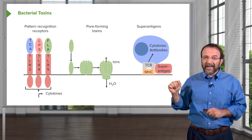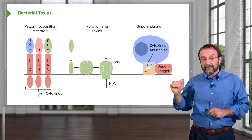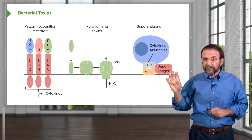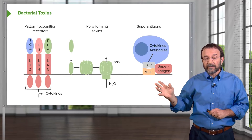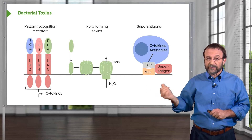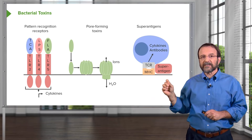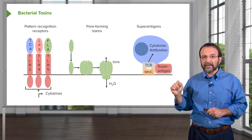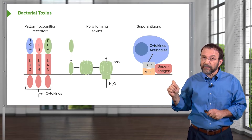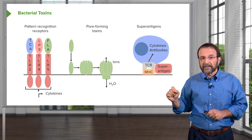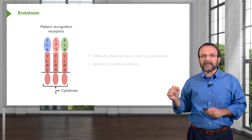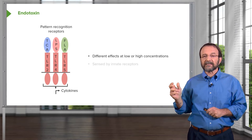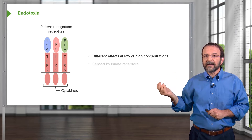Lipopolysaccharide is recognized by pattern recognition receptors located on the surface of the eukaryotic cell. We all have such receptors to recognize what is foreign, and when foreign molecules are recognized, the result is production of cytokines which mobilize the immune response but may also have detrimental properties. On the left of this slide are three pattern recognition receptors — one recognizes LPS, another recognizes flagellin, the protein that makes up the flagella of bacteria. Depending on how much endotoxin is present — low or high — it has different effects on the cell.